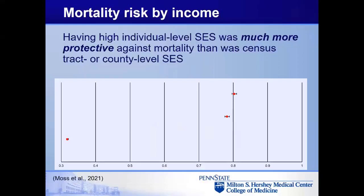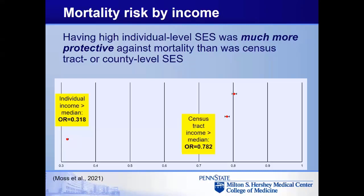What does this mean for our public health studies? At the individual level, having high income was protective against mortality over the follow-up period — the odds ratio is .32 for having high versus low income, compared to .782 for census tracts and .803 for counties. So the protective association between high income and lower mortality was much stronger for individual-level SES than census tract or county. Any time we rely on these aggregated measures of SES, we're probably underestimating the relationship with health outcomes.